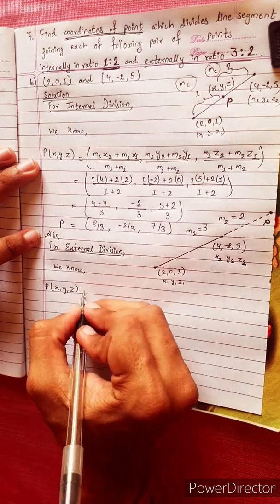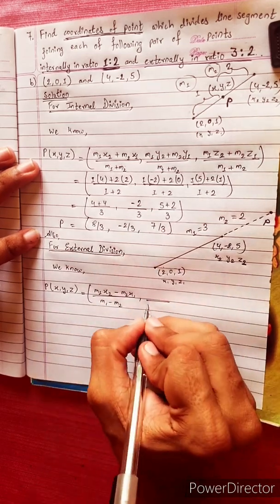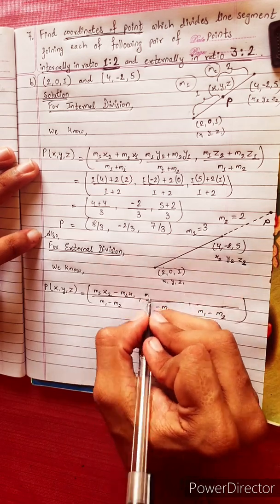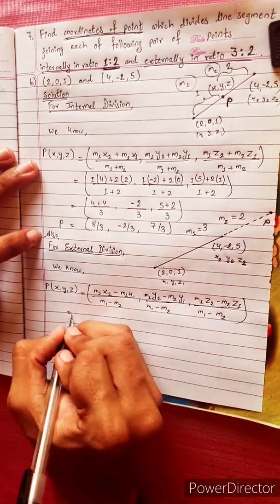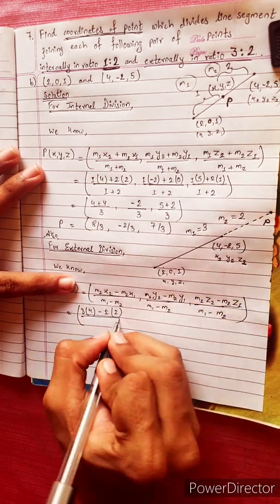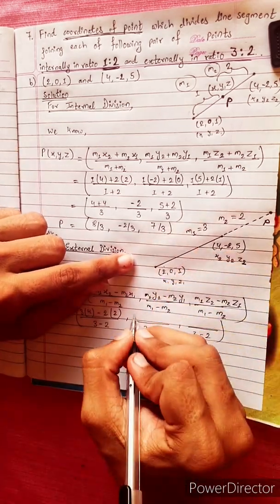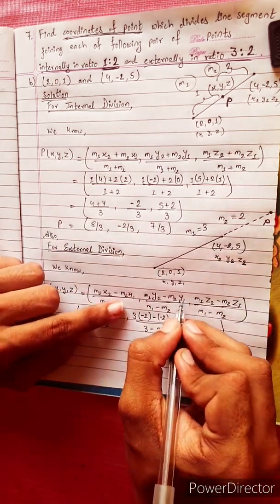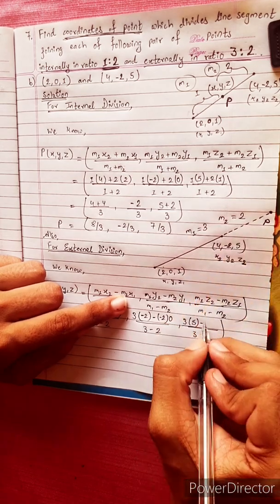P(x, y, z) equals (m1·x2 - m2·x1) divided by (m1 - m2), then (m1·y2 - m2·y1) divided by (m1 - m2), and (m1·z2 - m2·z1) divided by (m1 - m2). Substituting: m1 = 3, x2 = 4, m2 = 2, x1 = 2; denominator is 3 - 2 = 1. Then m1 = 3, y2 = -2, m2 = 2, y1 = 0; and m1 = 3, z2 = 5, m2 = 2, z1 = 1.